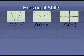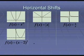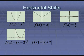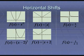Horizontal shifts require adding or subtracting things attached just to the x, and they do opposite of what you'd think. If you have x minus 2, it moves the graph to the right 2. If the expression has a plus 2 attached to just the x, it moves it to the left 2. A minus 1 attached to x moves it to the right 1.